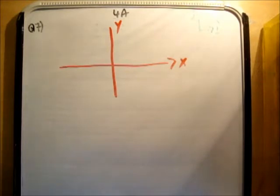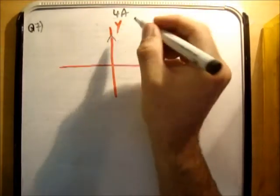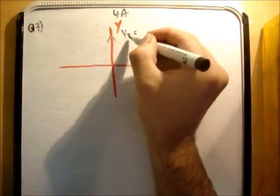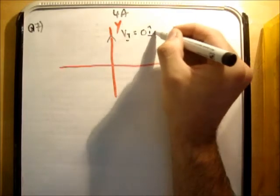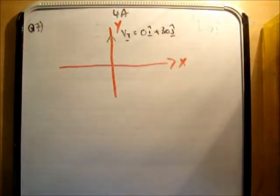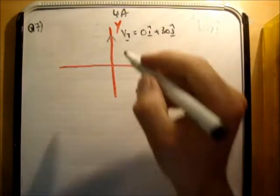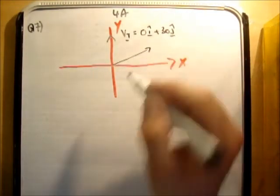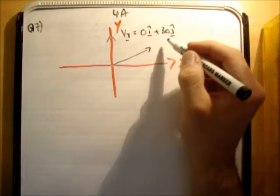Next, we need to draw the vectors. So we know that the velocity vector for the train is 30j hat, so it's 0i hat plus 30j hat. So vt is equal to 0i hat plus 30j hat. And the velocity of the car is 10i hat plus 6j hat. So here's vc, 10i hat plus 6j hat.